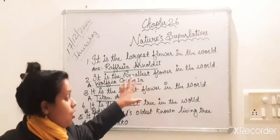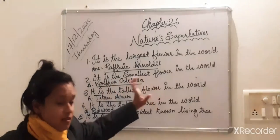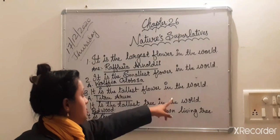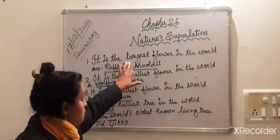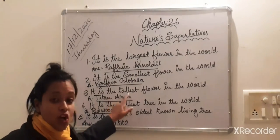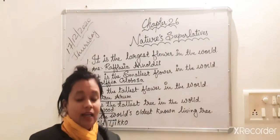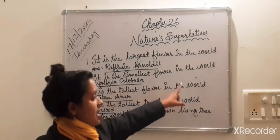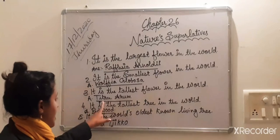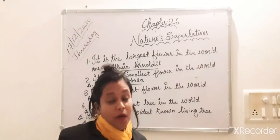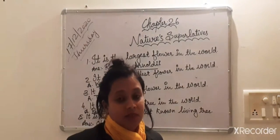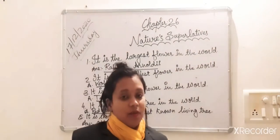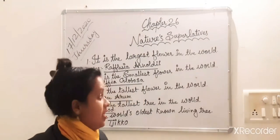The smallest flower in the world is Wolfia globosa. Now it is the tallest flower in the world. We talked about largest flower - largest means big one, and tallest means tall one. The tallest flower in the world is Titan arum.